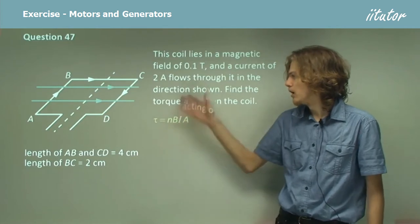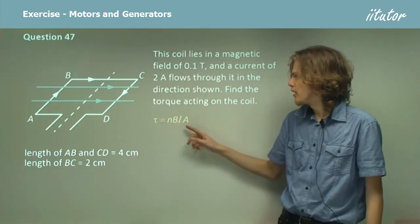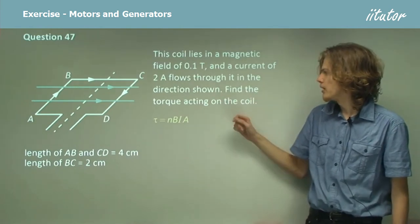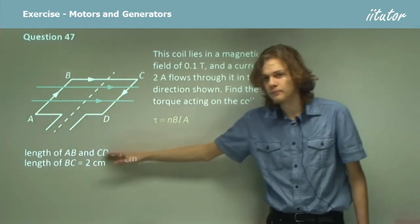Here we only have one coil. We have a value for B, a value for I and a value for area given by that.